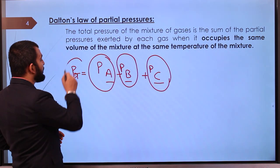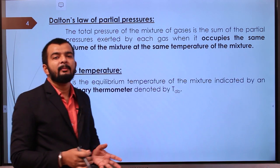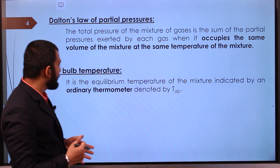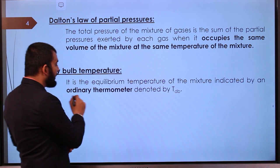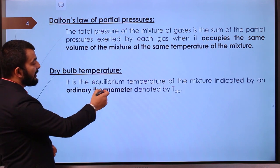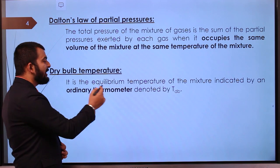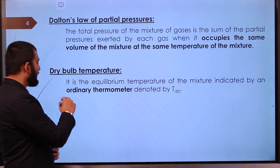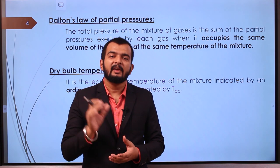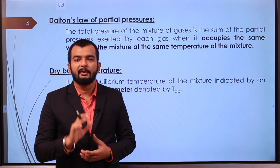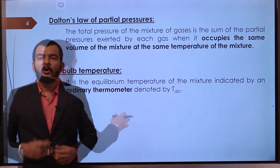In psychrometry, dry bulb temperature and wet bulb temperature play a very important role. Dry bulb temperature is the equilibrium temperature of the mixture indicated by an ordinary thermometer, denoted by T_DB. When you take a normal thermometer to measure the temperature of the surroundings, whatever temperature you get is the dry bulb temperature.